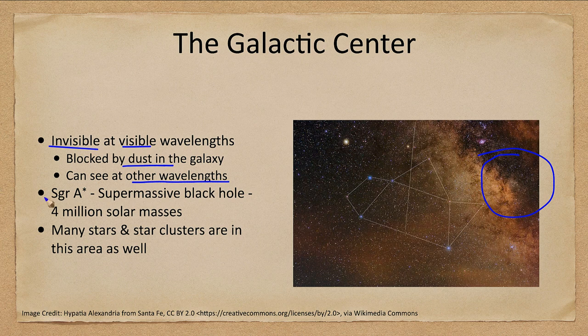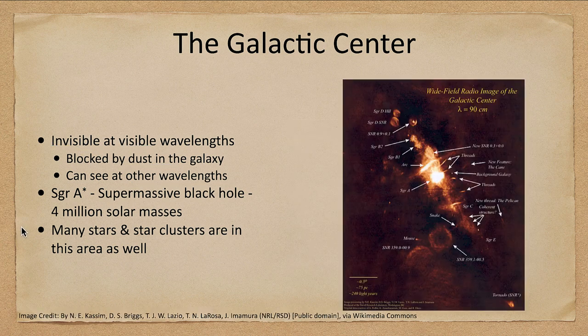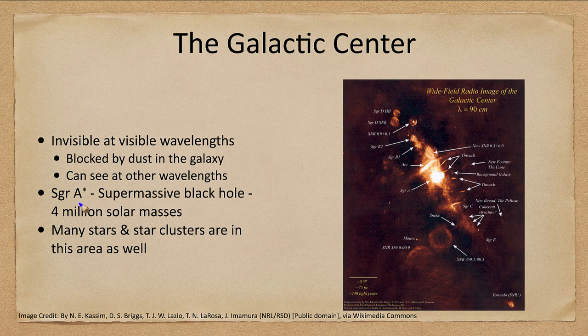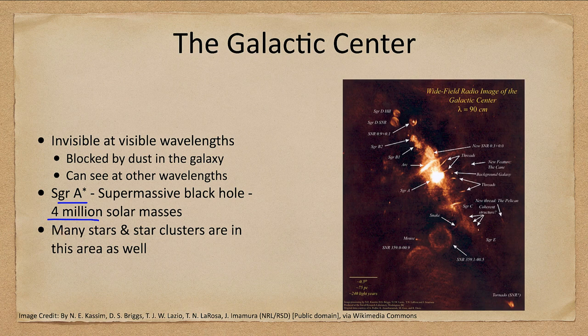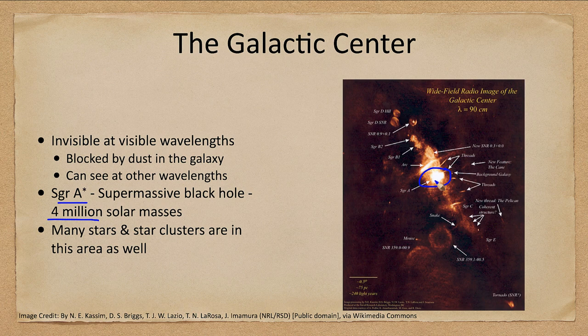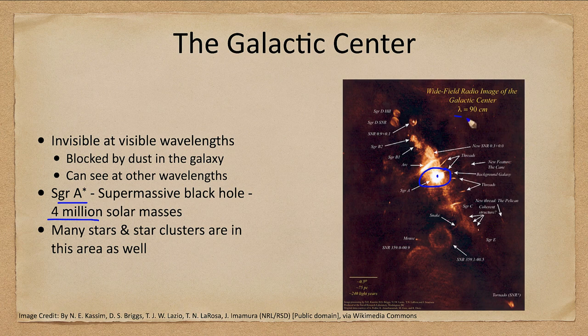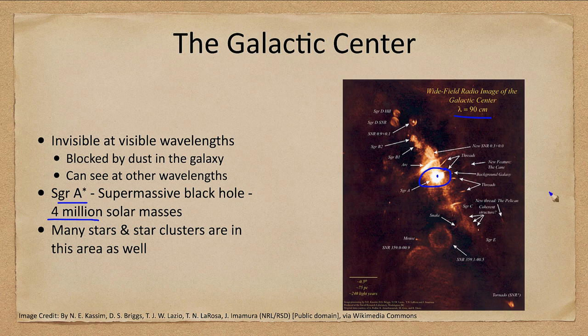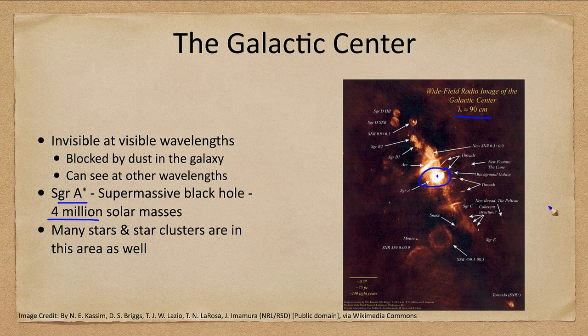Now we have what we call Sagittarius A*—the supermassive black hole at the center of our galaxy. This is about four million times the mass of our sun. Sounds tremendous, but we're actually going to see that this is very small compared to others. Sagittarius A is the bright source at the center; Sagittarius A* is the very central black hole. Here we have zoomed in looking at radio wavelengths of 90 centimeters to look at the area around the center of our galaxy.